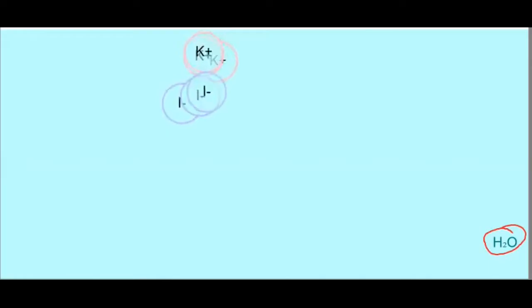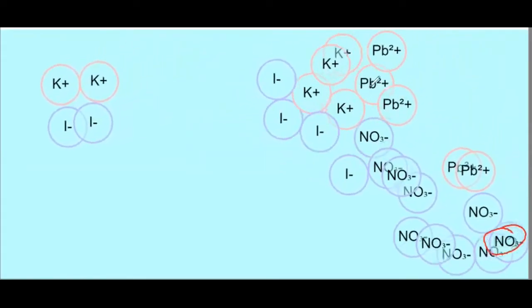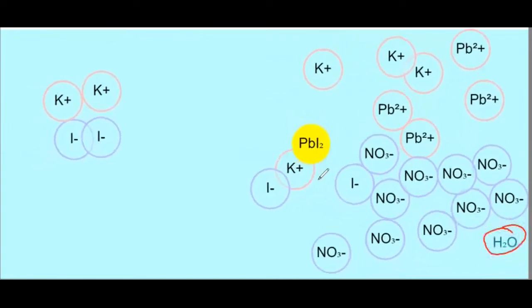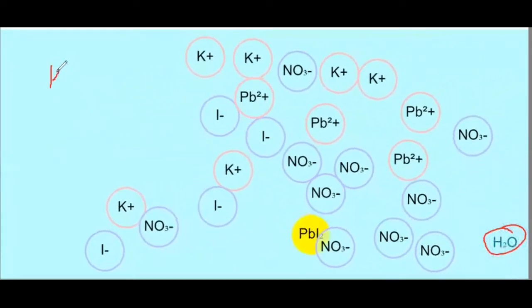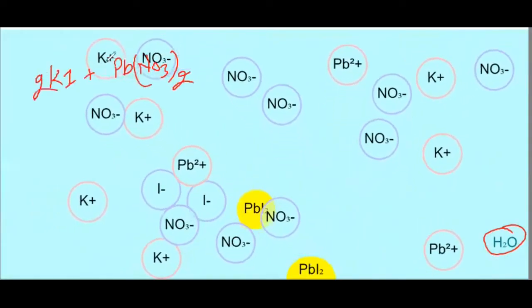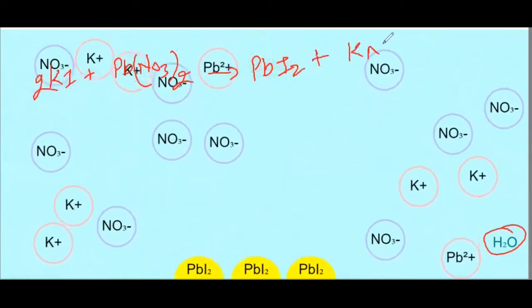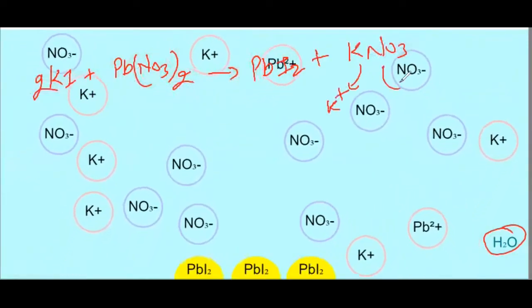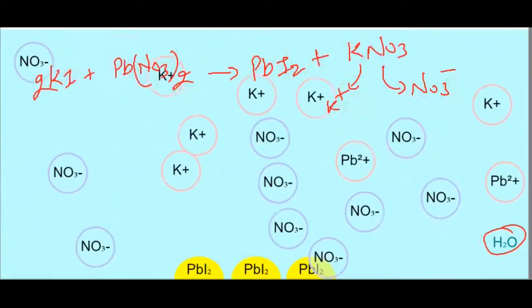Next reaction में solvent molecule water है, लेकिन यहाँ reaction हो रही है KI versus lead nitrate के बीच। जब lead ion, iodide ion के साथ interact करेगा — lead की valency 2 है, iodine की valency 1 है — तो वो lead iodide बनाएगा, which is a yellow precipitate। Reaction: KI + Pb(NO3)2 → PbI2 + KNO3। K⁺ और NO3⁻ ions already solution में available हैं।